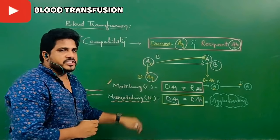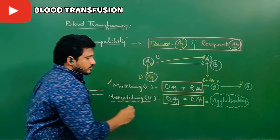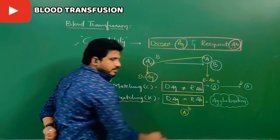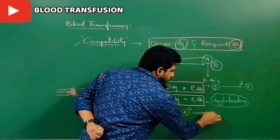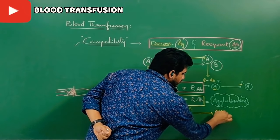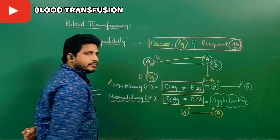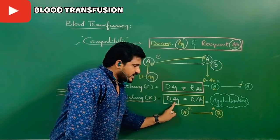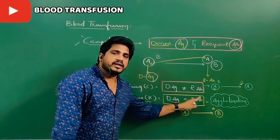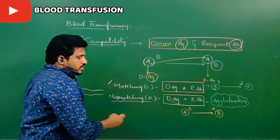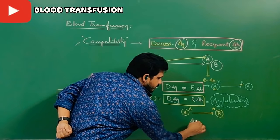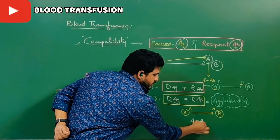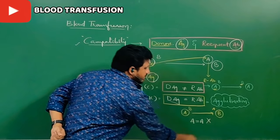For a mismatching example: an A blood group person with B antibodies is donating to a B blood group person who has A antibodies. The formula for mismatching is donor's antigen equals recipient's antibody. Donor's antigen is A, recipient's antibody is A. So A equals A — that is mismatching. These antibodies can stop these antigens, forming clusters — agglutination occurs.